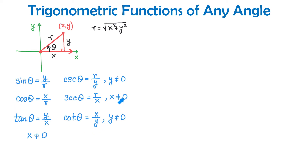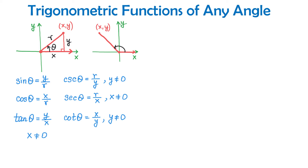These 6 trigonometric functions work for any angle in any of the quadrants. Let's draw an angle in quadrant 2. We plot a point with coordinates x and y and draw the angle in standard position with the terminal side passing through this point. The angle formed is an obtuse angle, theta. Drawing a perpendicular down to the x-axis forms a right triangle. In quadrant 2, the x coordinate is negative and the y coordinate is positive.